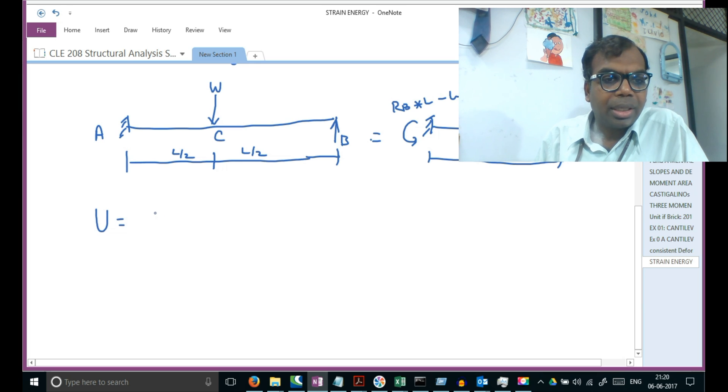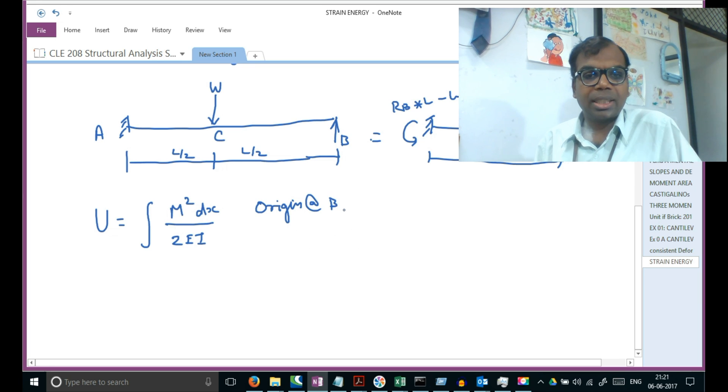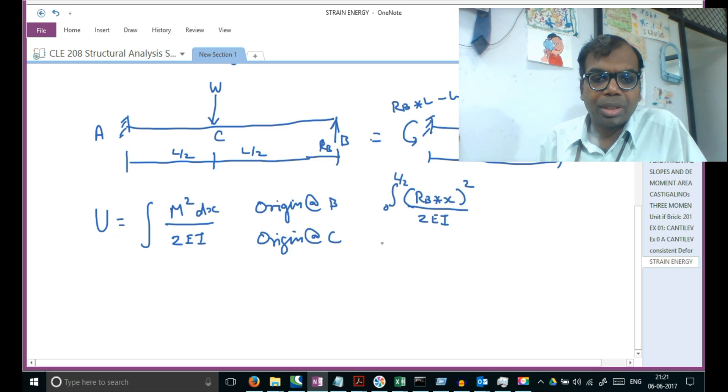The total energy in the beam U equals the integral M squared dx by 2EI. We're splitting this into two parts - one with origin at B and one with origin at C. When the origin is at B, I integrate between limits 0 to L by 2, and this is RB into X, squared, divided by 2EI.